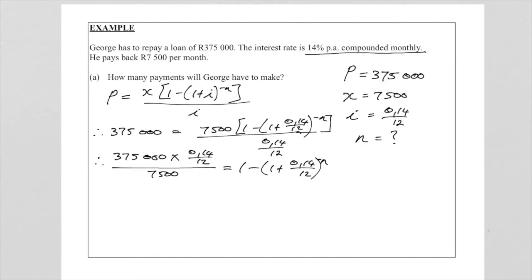So this bracket has got a negative outside so we are going to move this bracket to the left and this whole fraction we are going to take to the right. So that will give us (1 plus 0.14 over 12) to the minus n is equal to 1 minus 375,000 times by 0.14 over 12 divided by 7,500.